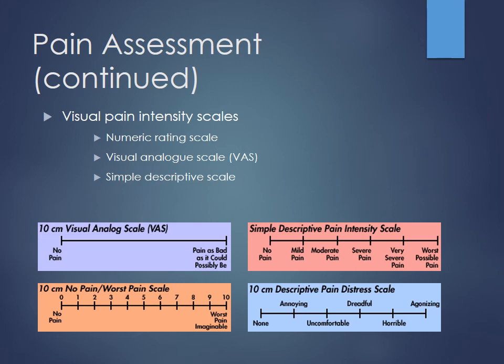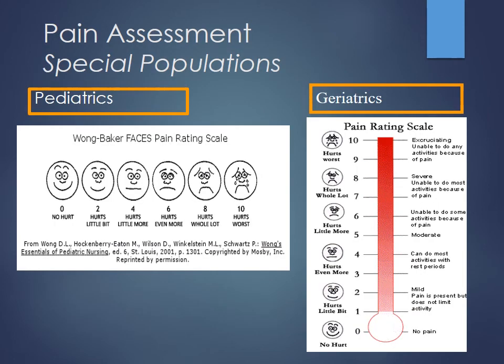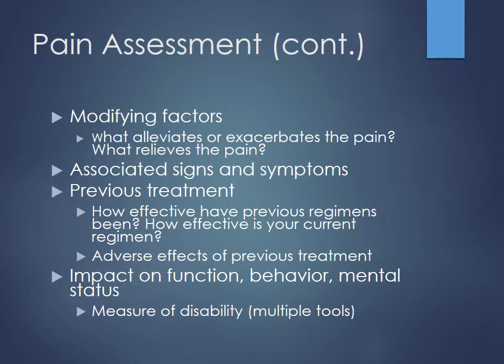For patients who cannot communicate well or have limited mental faculties, you may use the faces pain scale or a thermometer scale — something more familiar to geriatric patients. When looking at modifying factors, the big thing is previous treatment — what have they been on before, and how did that work? That determines whether you'll use the same thing again or change gears. Also look at their function and behavior — maybe they can only walk across the room once because of pain, but after tuning up their therapy, they can do it several times.